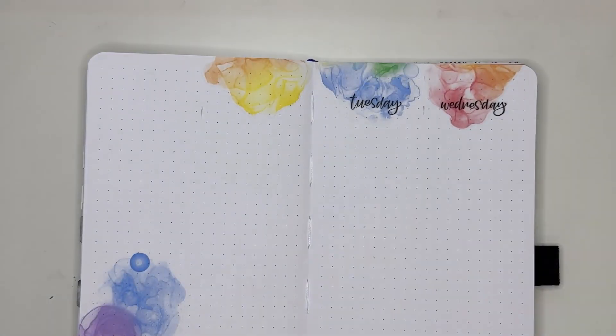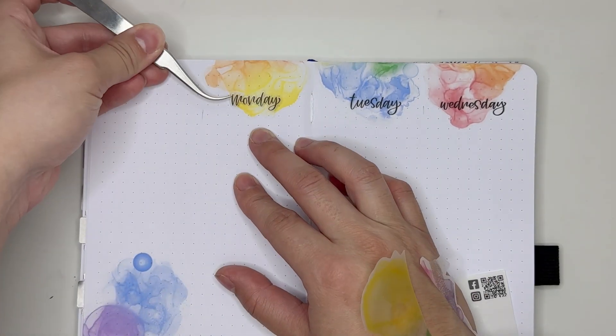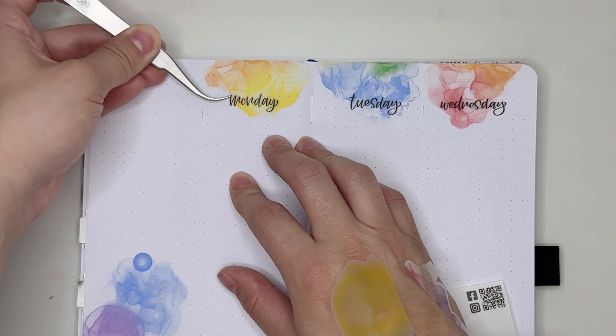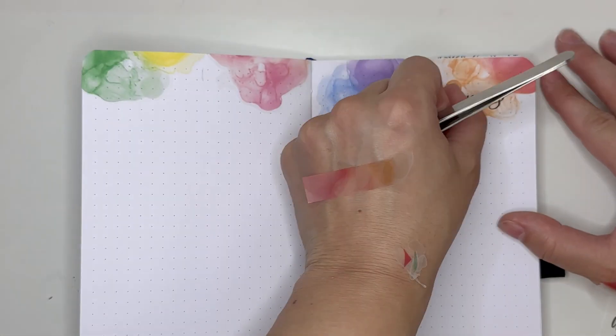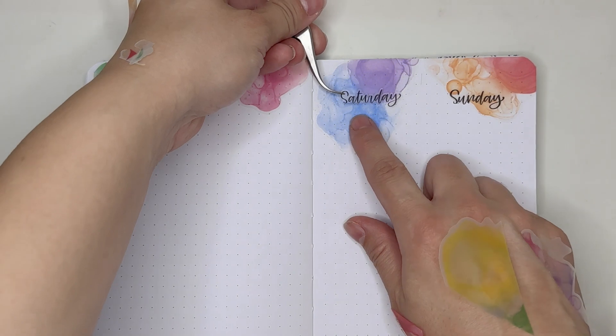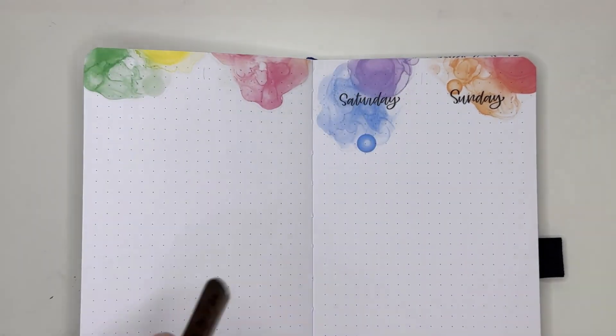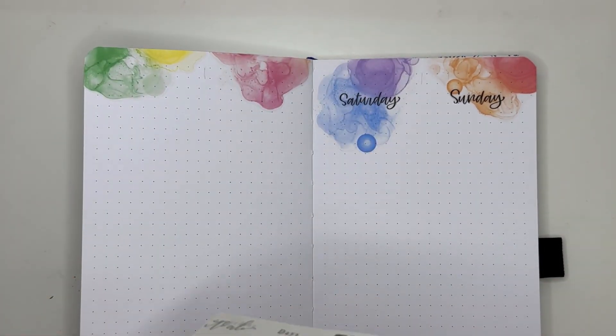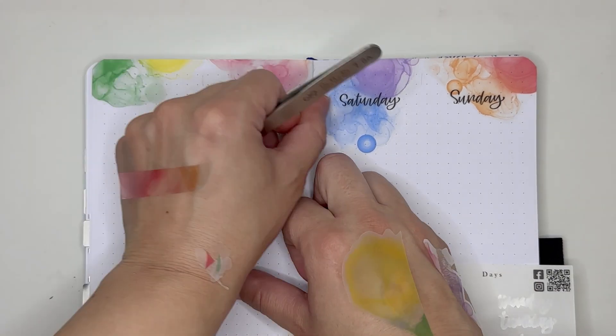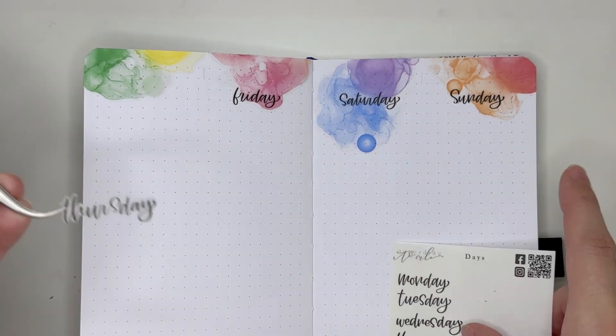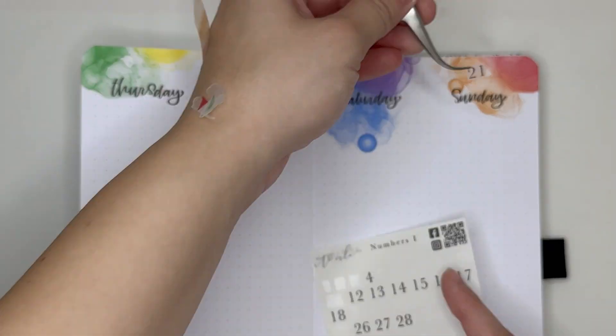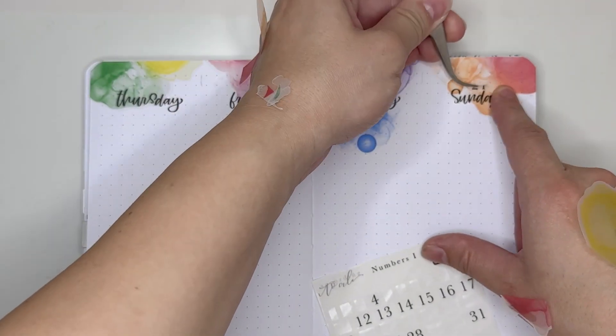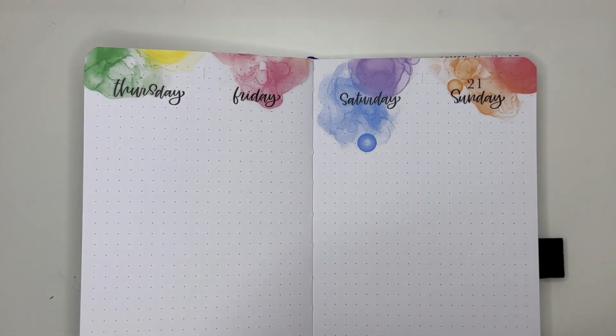Now I'm going in with my days of the week. These are from According to Ally on a mini sticker sheet. I believe that she may have taken these off of her shop. I could be wrong, but I think last time I looked, I had a hard time finding them because she's kind of thinking of redoing all of these script stickers that she has.